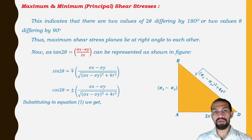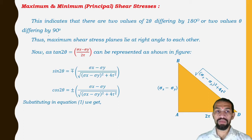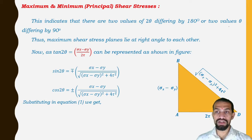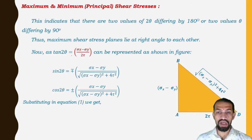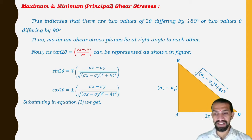For the maximum and minimum principal shear stresses, this equation indicates there are two values of 2θ differing by 180°, or two values of θ differing by 90°. This means the maximum shear stress planes lie at right angles to each other — that is, they are perpendicular. Now, tan 2θ = (σ_x − σ_y) / (2τ) can be represented as shown in the figure, where tan is opposite over base.